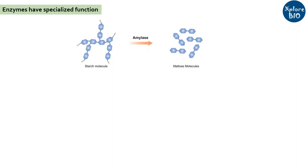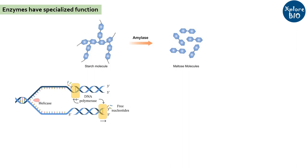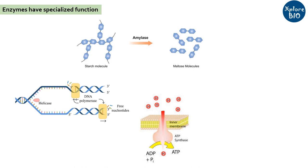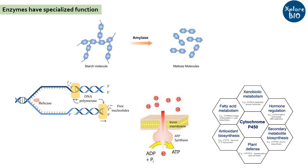Enzymes may be highly specialized in their function, which means they only catalyze a particular reaction converting a particular substrate to its product. For example, amylase breaks down complex polysaccharide starch to its simple sugar. DNA polymerase replicates DNA by adding nucleotides to the replicating DNA fragment. ATP synthase utilizes ADP and inorganic phosphate to synthesize ATP.